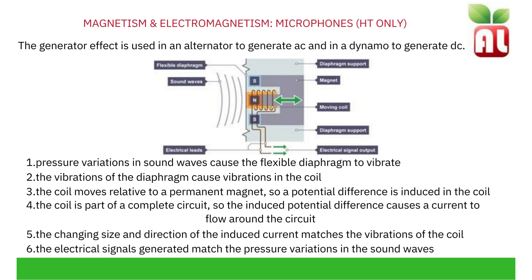In a microphone, pressure variations in sound waves cause the flexible diaphragm to vibrate. The vibrations of the diaphragm cause vibrations in the coil. The coil moves relative to a permanent magnet, so a potential difference is induced in the coil. The coil is part of a complete circuit, so the induced potential difference causes a current to flow around the circuit. The changing size and direction of the induced current matches the vibrations of the coil, and the electrical signals generated match the pressure variations in the sound waves.